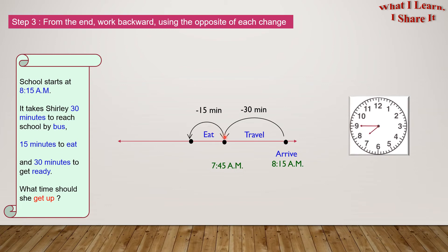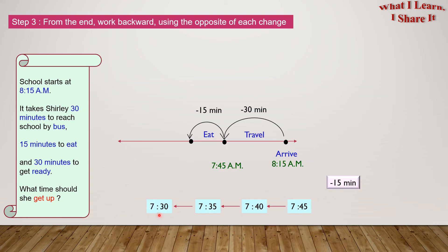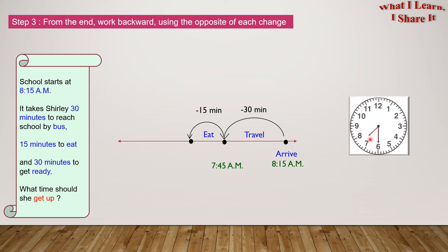She takes 15 minutes to eat. So, we are going to work backwards 15 minutes. 7:45, five minutes earlier would be 7:40, ten minutes earlier would be 7:35, 15 minutes earlier would be 7:30. Here is 7:30 and she started eating at 7:30 AM.